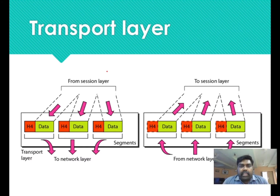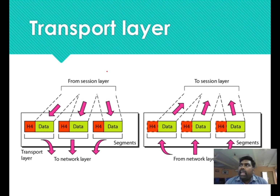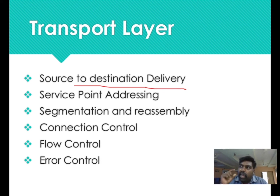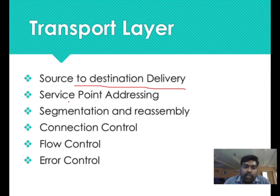So the next important layer is the transport layer. From the name itself you can understand — transmission is used in the transport layer, which governs transport responsibilities. Once again, the data link layer is used in the transport layer and it also has controls. This layer also performs source to destination delivery. The type of addressing used here is called service point addressing.